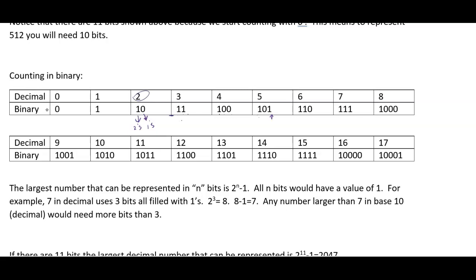The largest number you can represent with n bits is 2 raised to the n minus 1. That's the case where all n bits have a value of 1. For example, 7 uses 3 bits all filled with ones: 2 to the 3rd is 8, minus 1 is 7. With 5 bits all set to 1, you get 2 to the 5th minus 1 = 32 minus 1 = 31. To reach 32 you'd need to add another digit.